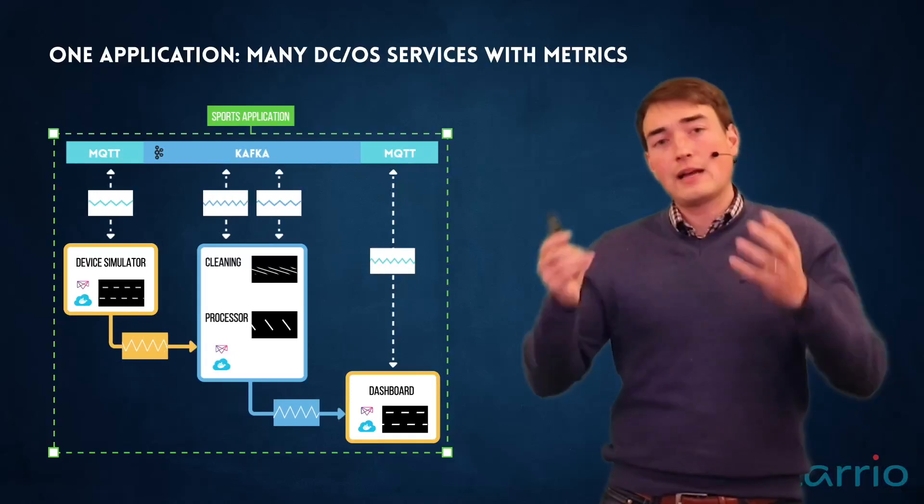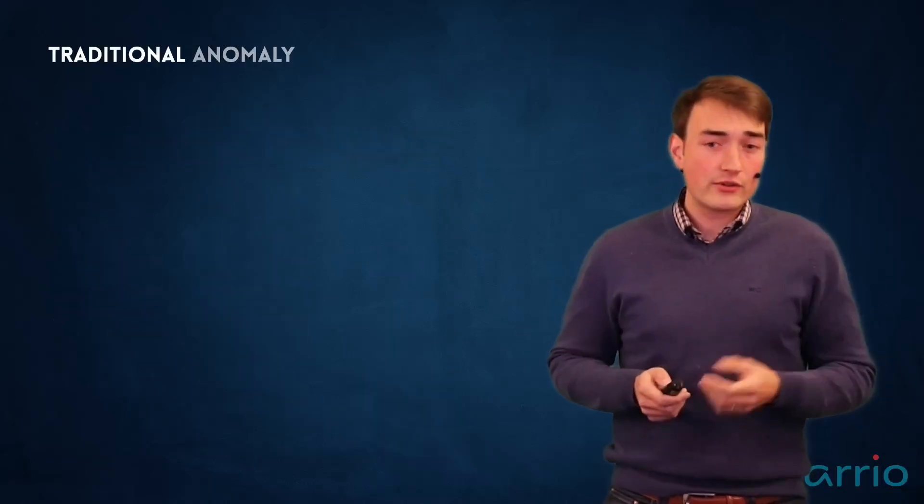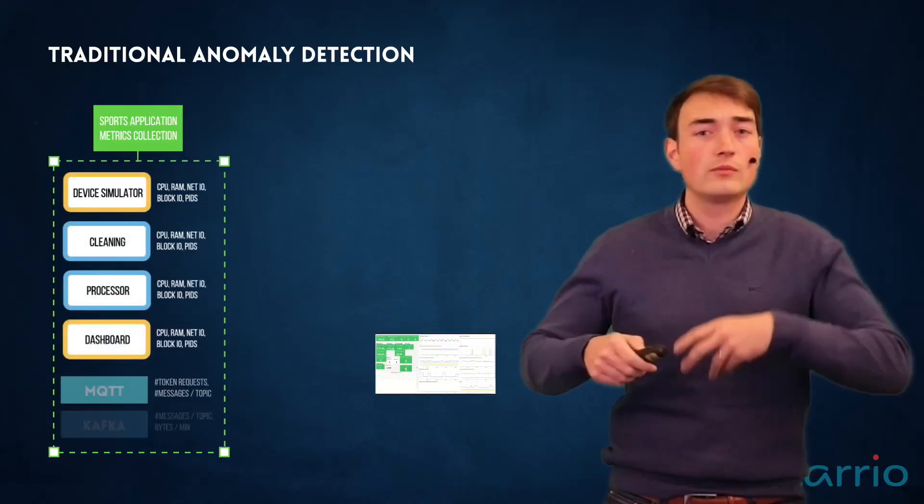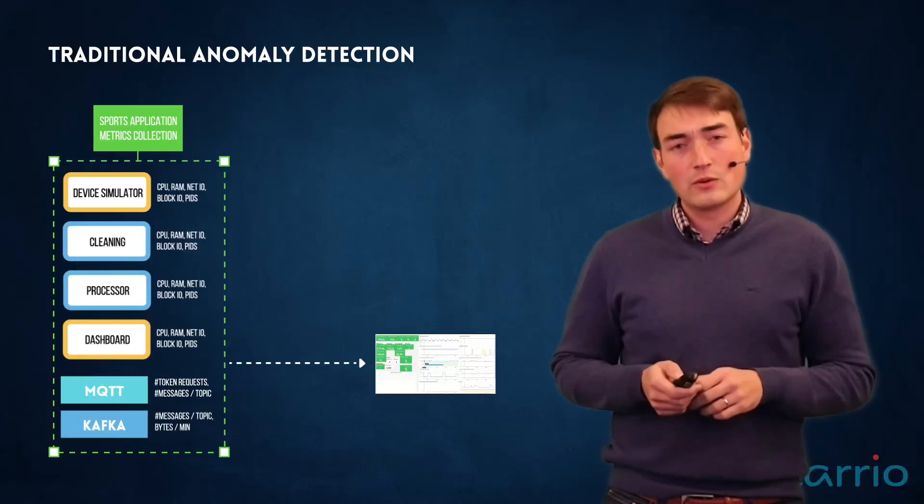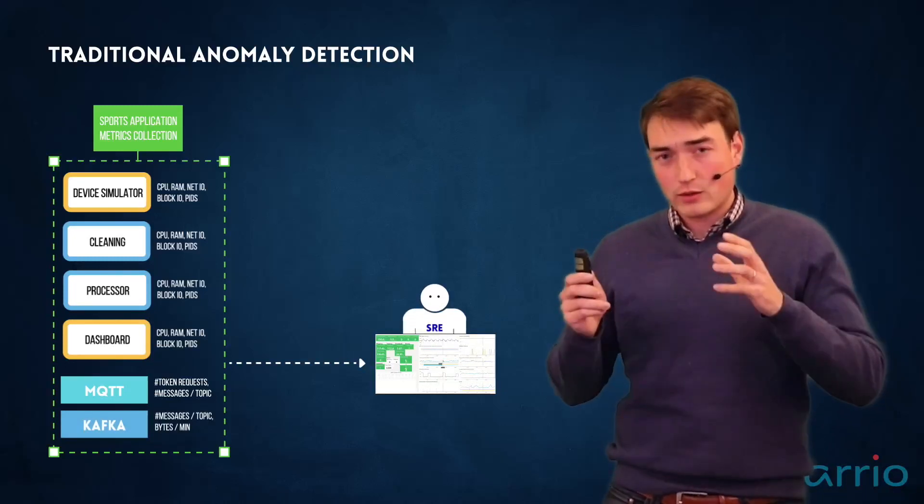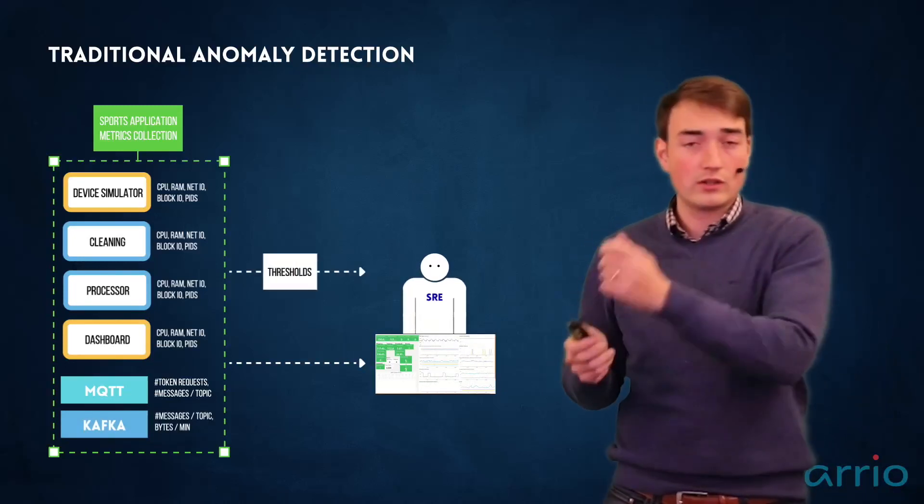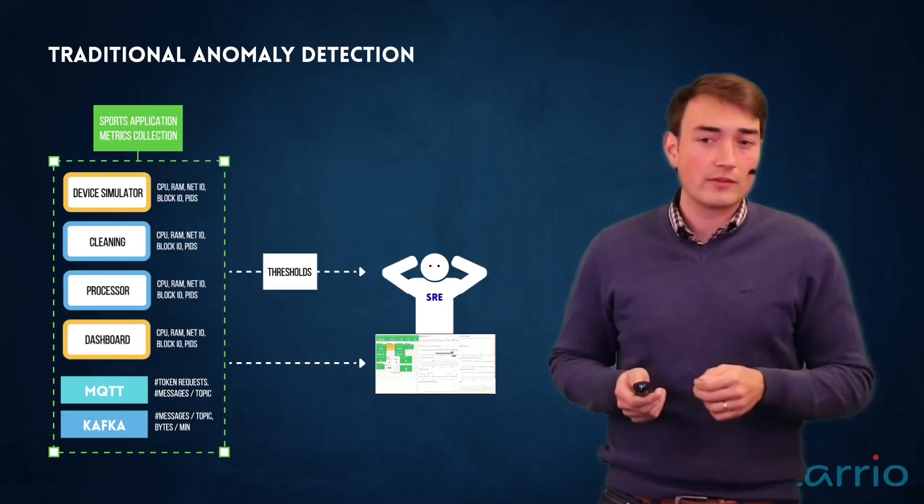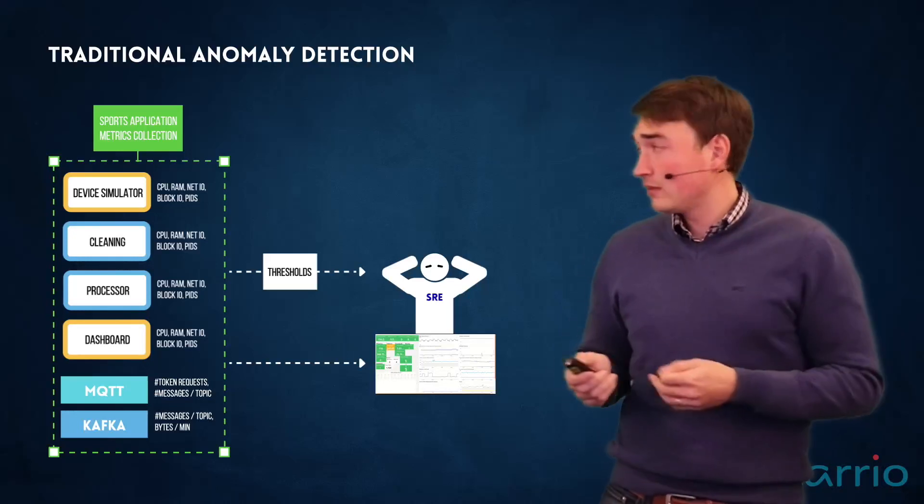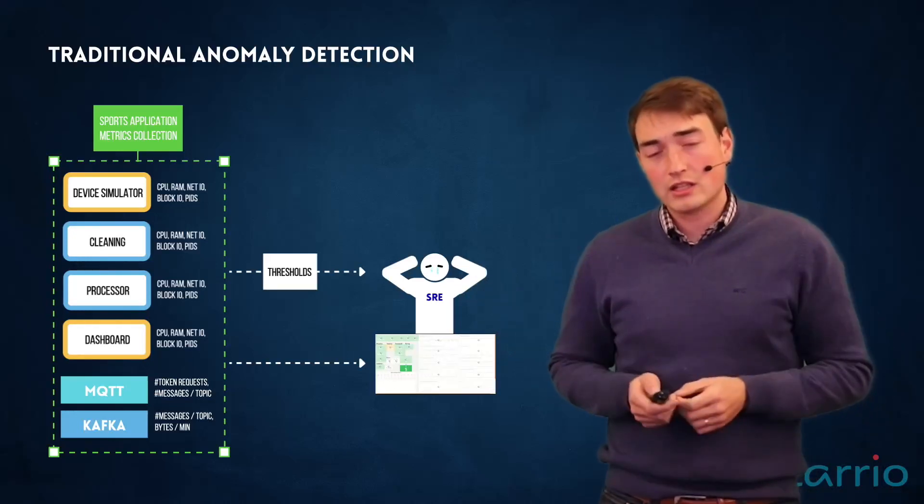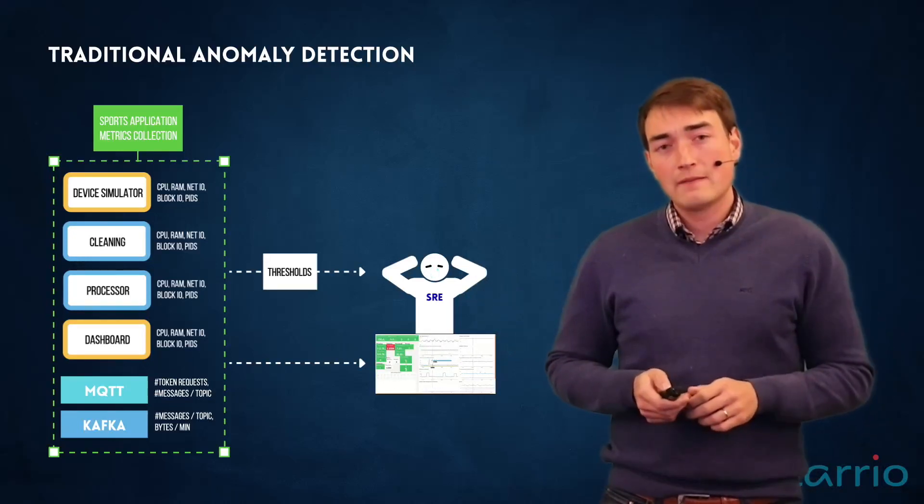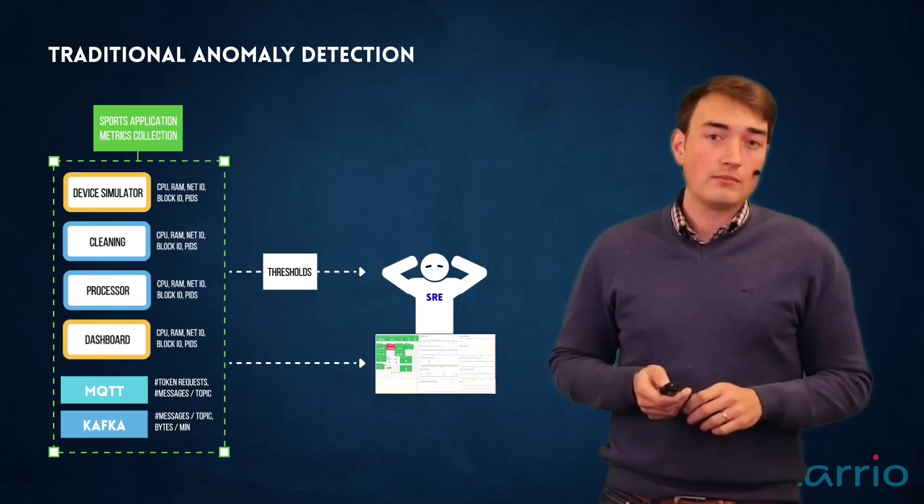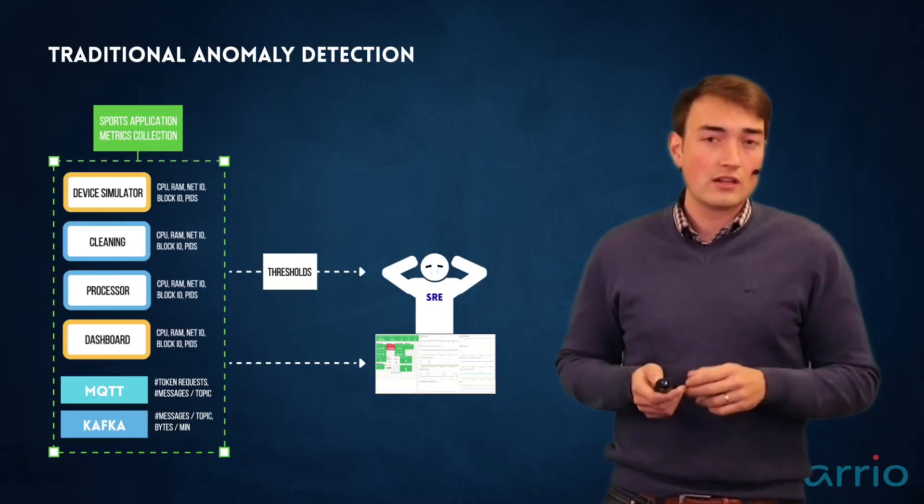So this whole application has a lot of metrics: CPU, RAM, NetIO, BlockIO, the number of PIDs, the number of tokens provided. So we have a lot of data for that one specific application but also the core components that are driving that application on our platform. So the SRE team and all the people that are looking at that dashboard are confronted with a lot of data, and it's not easy to see specific things or anomalies.